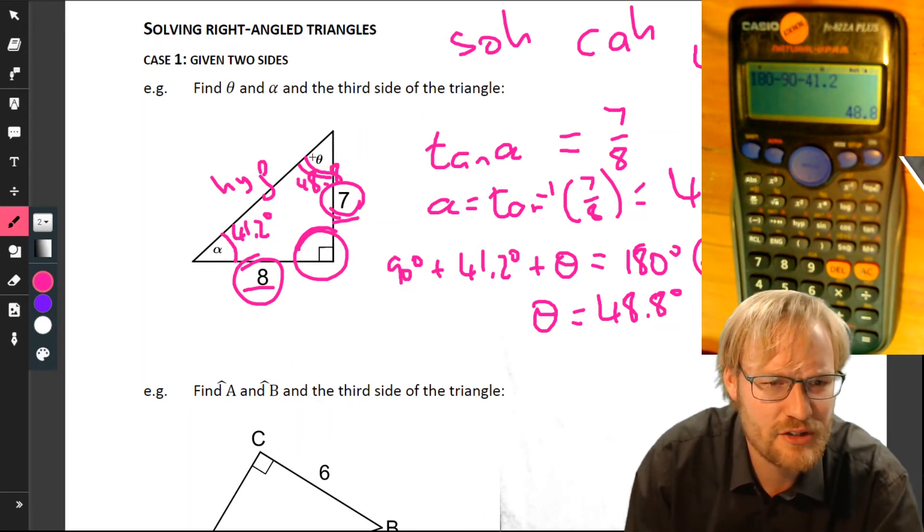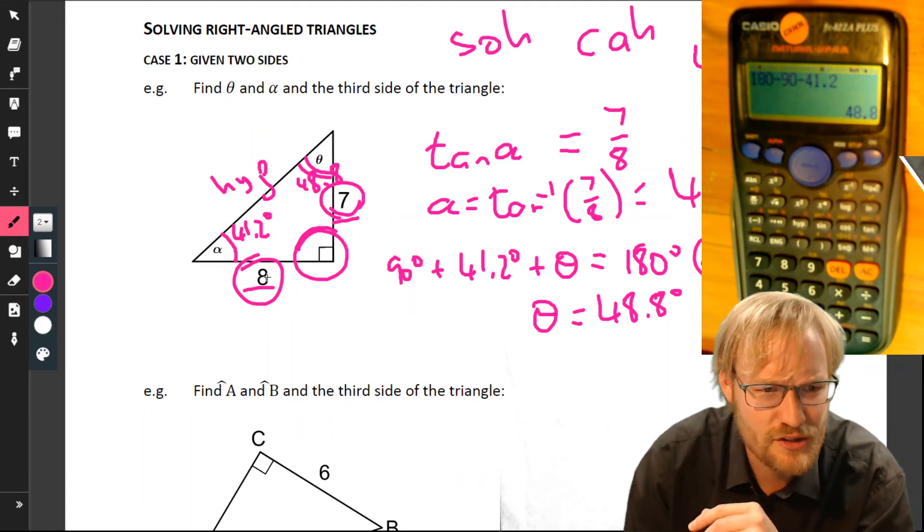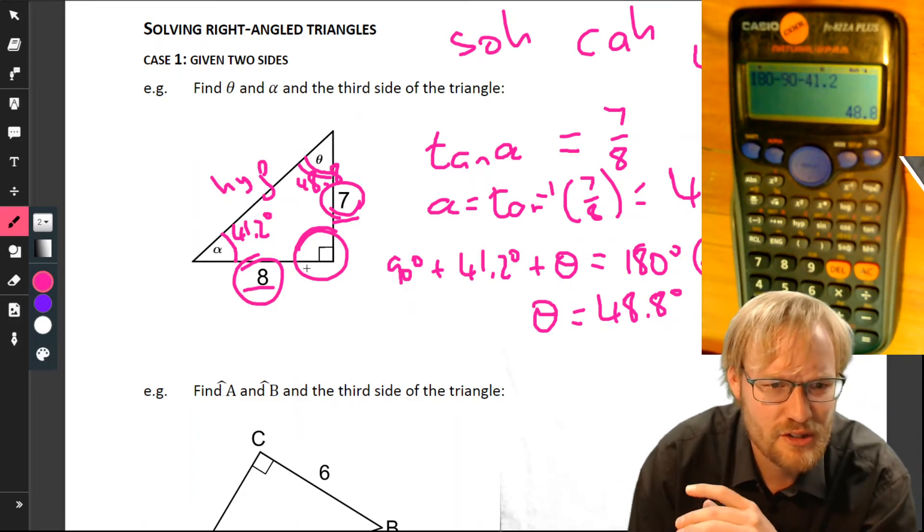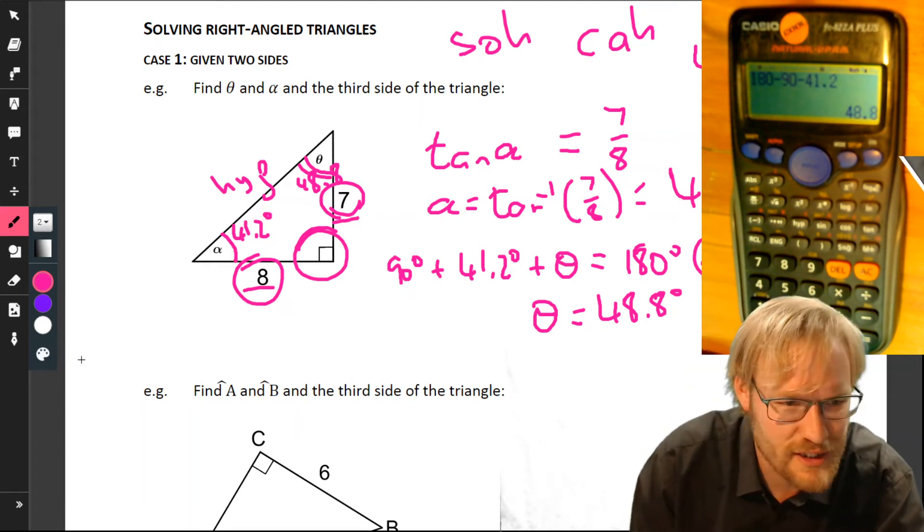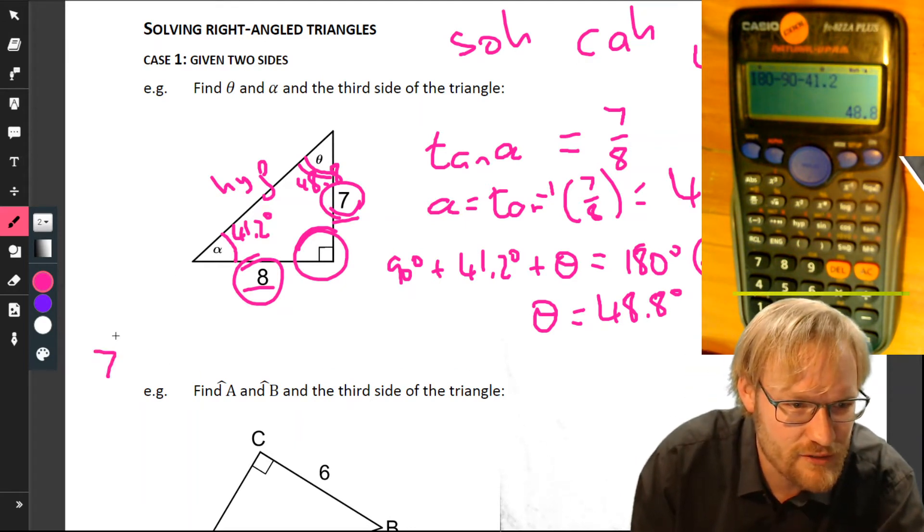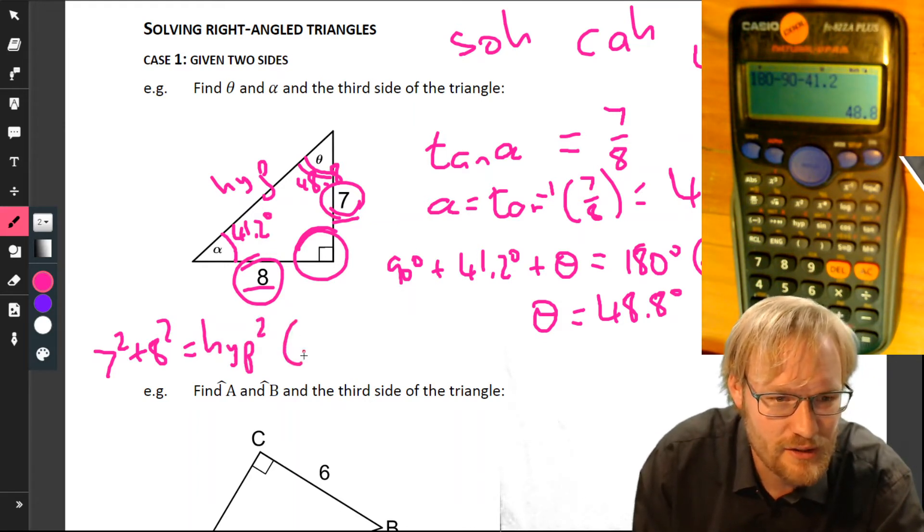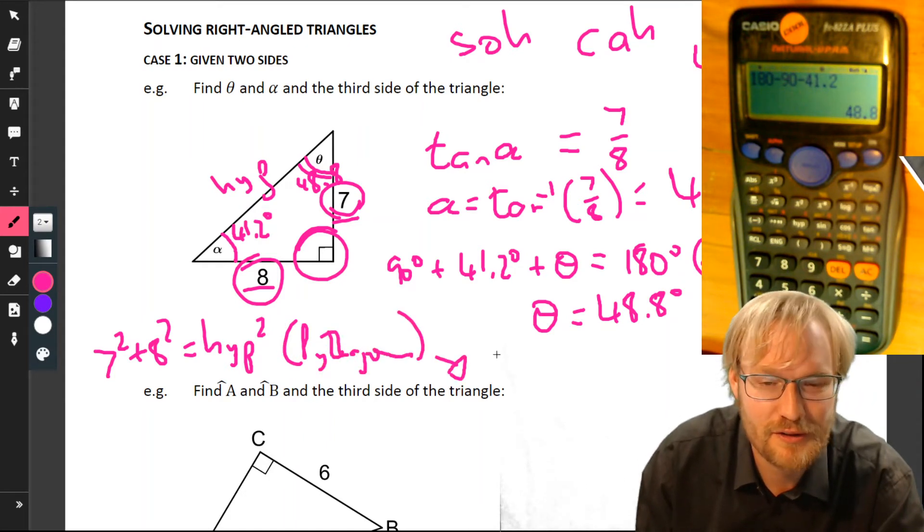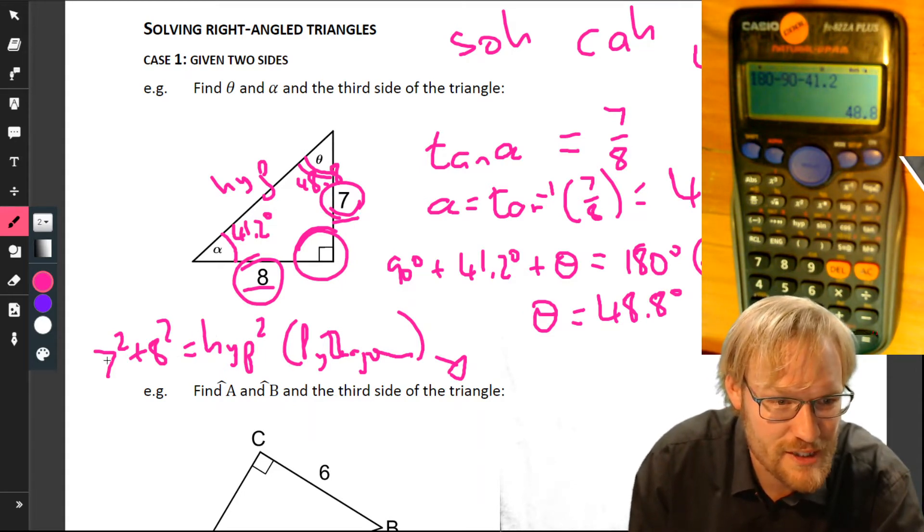Our hypotenuse now—we've got a myriad of options. We could use sine and go sine as opposite over hypotenuse, but let's just use our old friend Pythagoras. It always works nicely. So we can just go 7 squared plus 8 squared equals the hypotenuse—I'm just going to call it hype squared. Reason: Pythagoras.